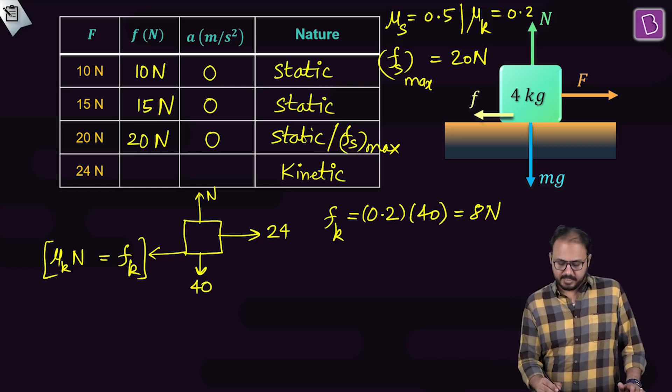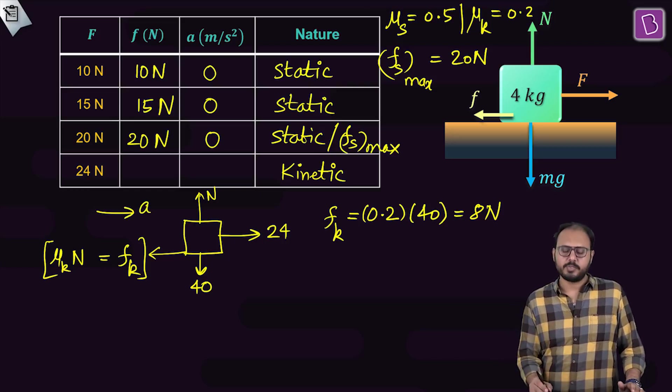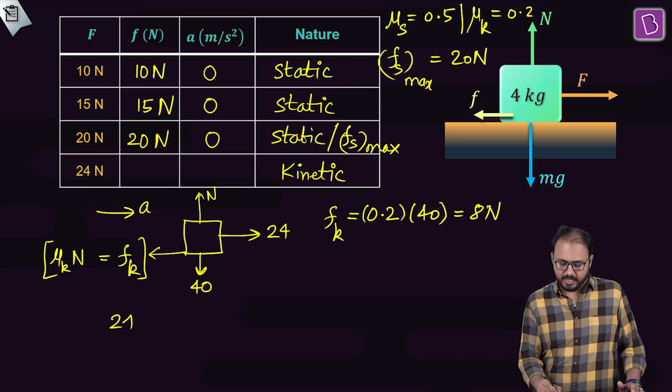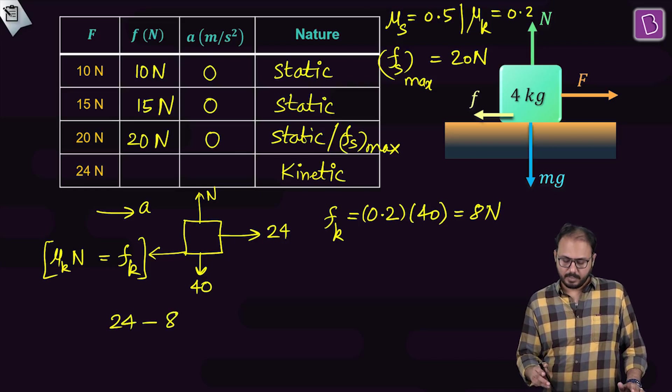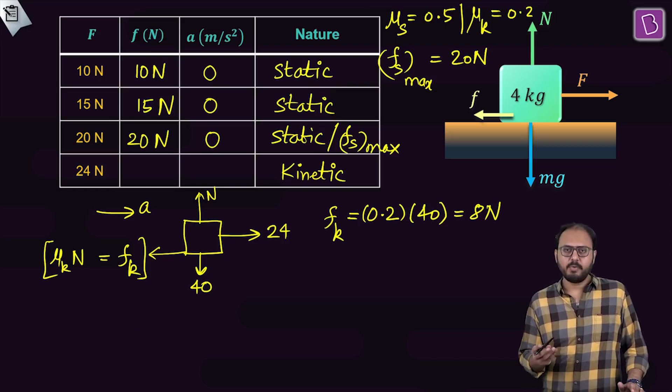That means net force equal to mass times acceleration. This thing will accelerate towards right. And 24 minus fk. And what is fk equal to? 8. I repeat. Net force equal to mass into acceleration.